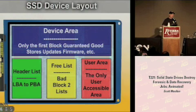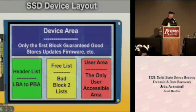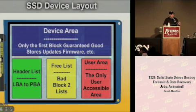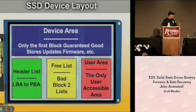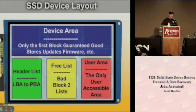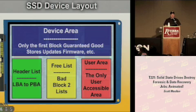In solid state disk, you have a device area where only the first block is guaranteed to be good. They use that first block to write tables, pointers, and headers so it doesn't go bad and lose track of all your content. It doesn't move that piece around, but it moves all other content. There's also a translation from LBA — logical block addressing — to PBA, physical block addressing. That LBA-to-PBA table is something you don't have access to and can't examine at all.